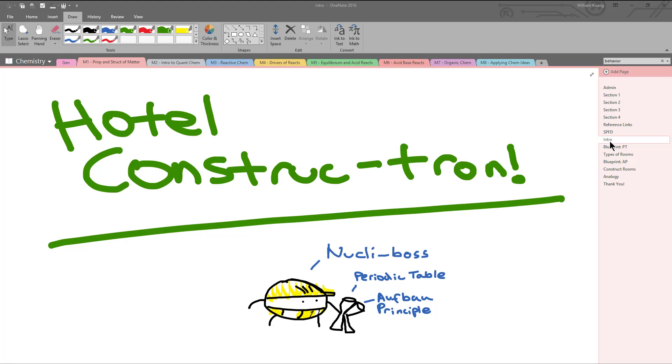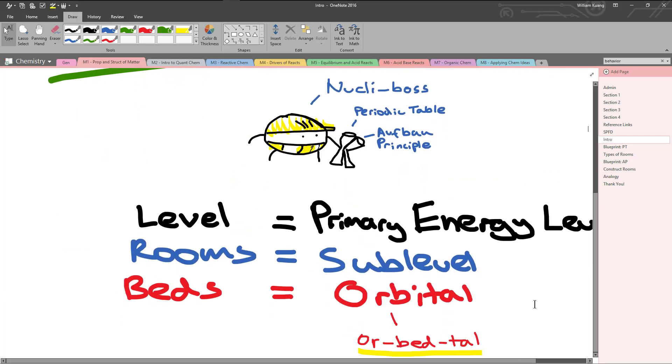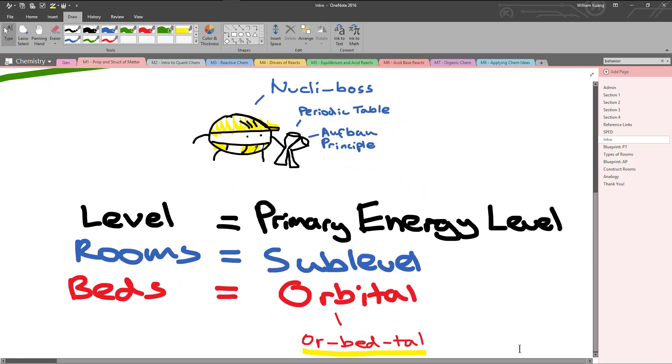So in this analogy, we use the levels of the hotel to represent the primary energy levels, whilst we use the rooms to represent the sublevels, that's the SPDF sublevels. We use beds to represent the orbitals. And the electrons will sit in the beds, or sleep in the beds, and you have two electrons per bed.